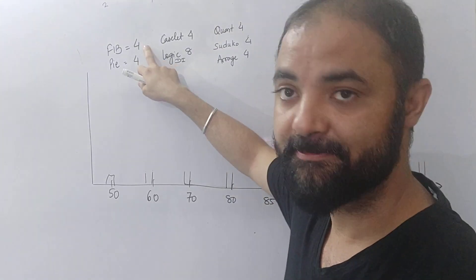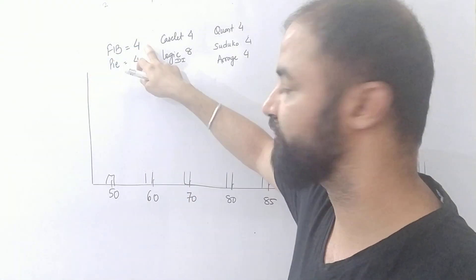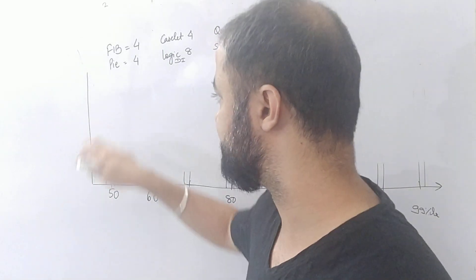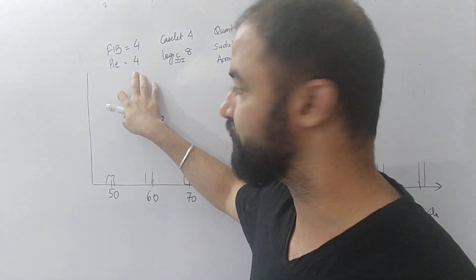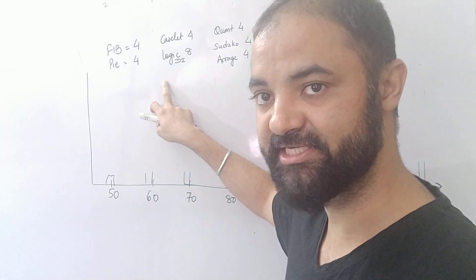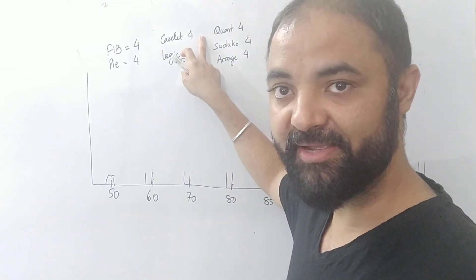Let's look at the DI section first. Fill in the blanks, there are 4 questions - they will give you a table with few data missing. Pie chart 4 questions, caselet 4 questions, logic based DI 2 sets 8 questions, quant based 4 questions.